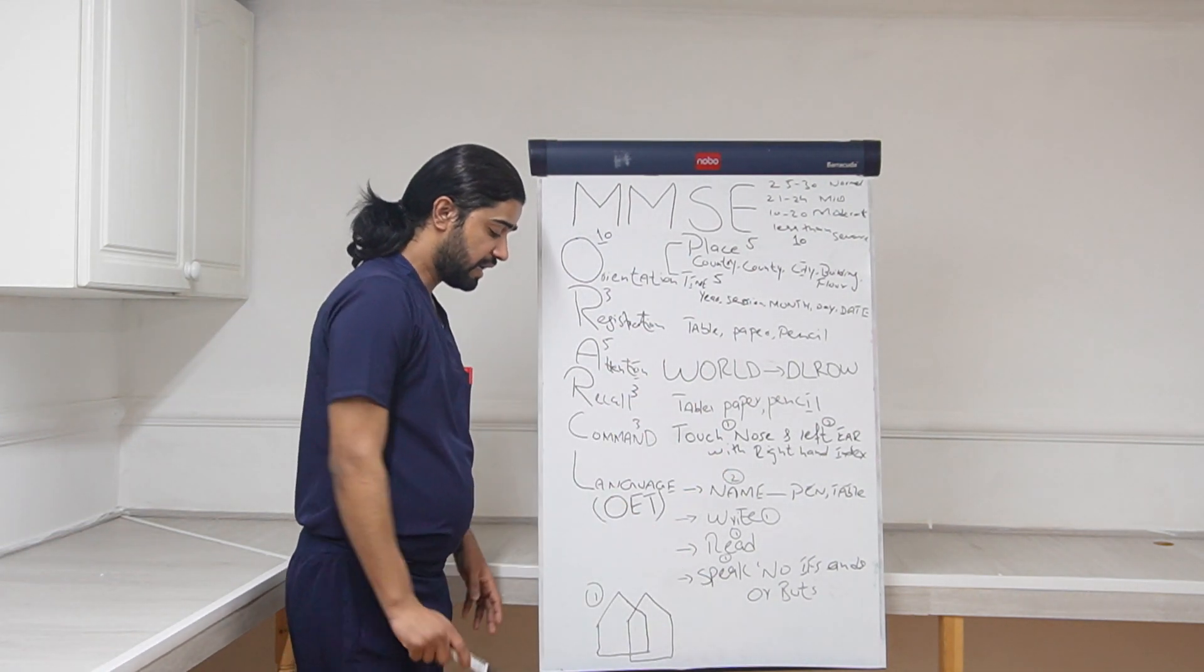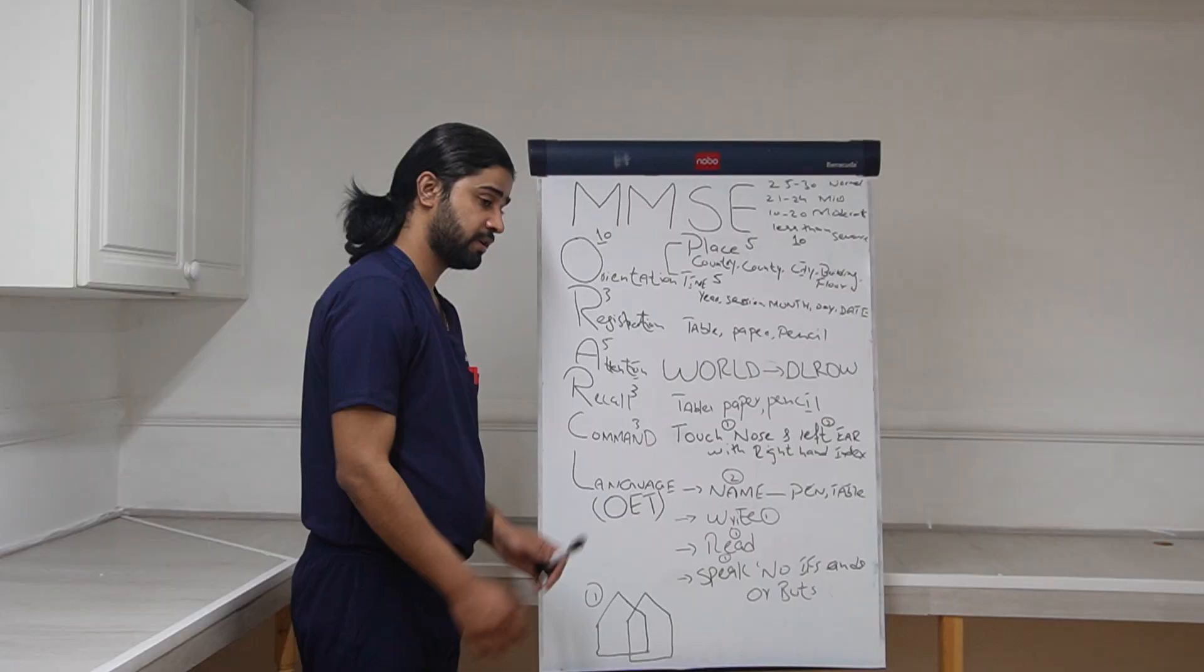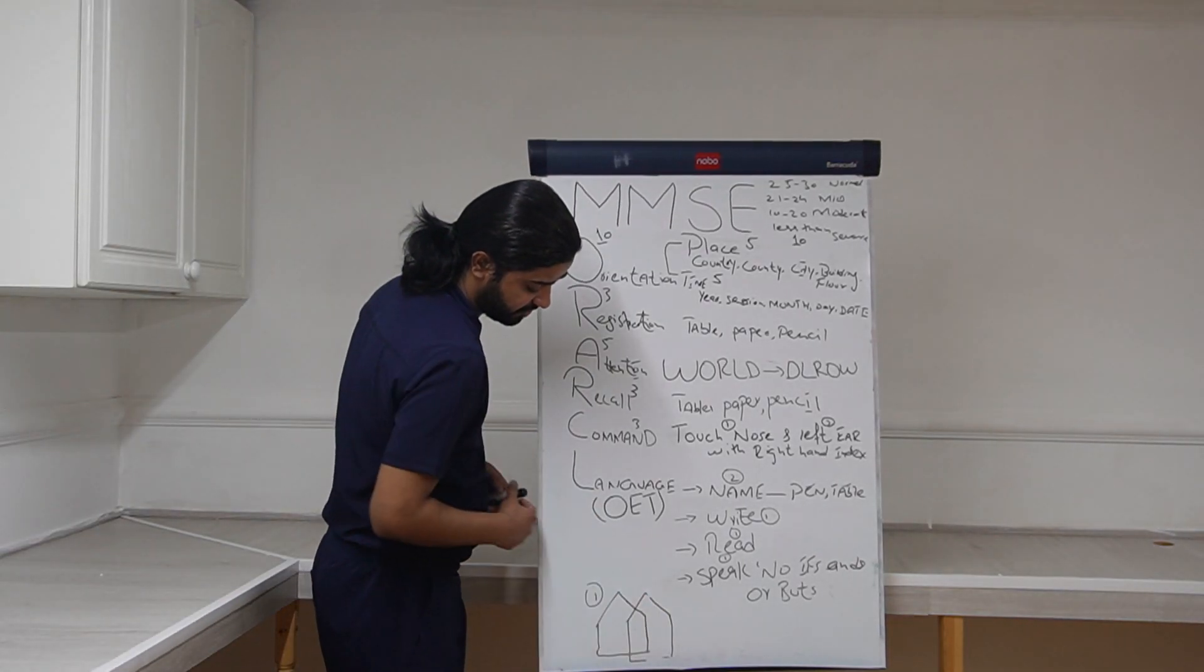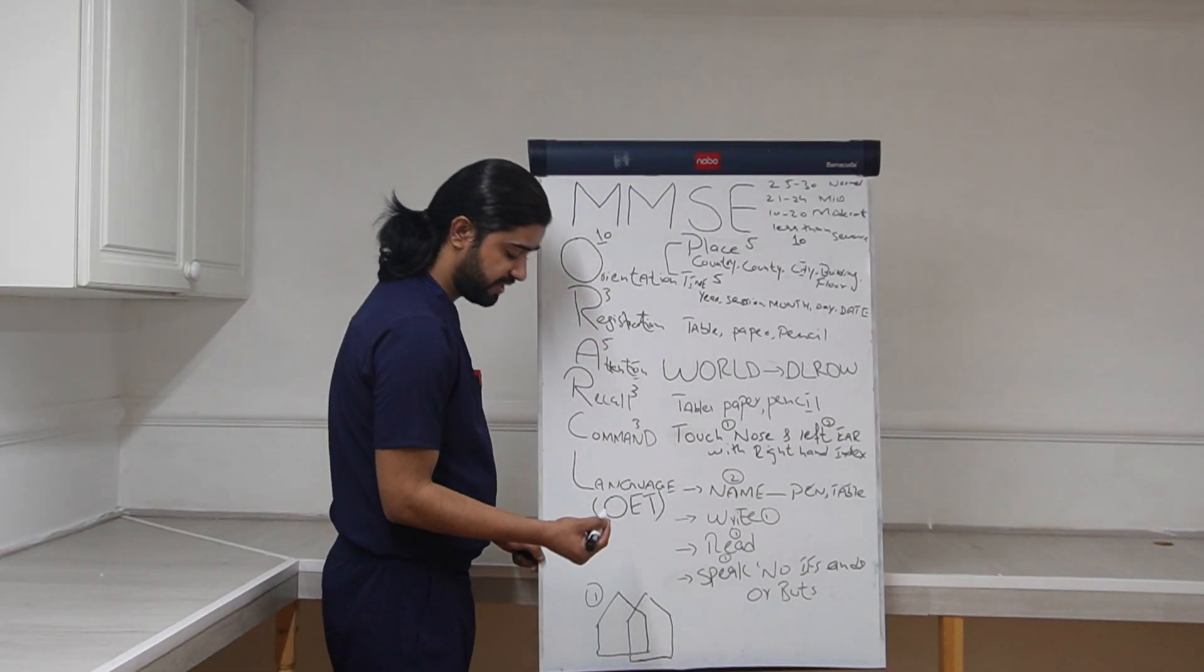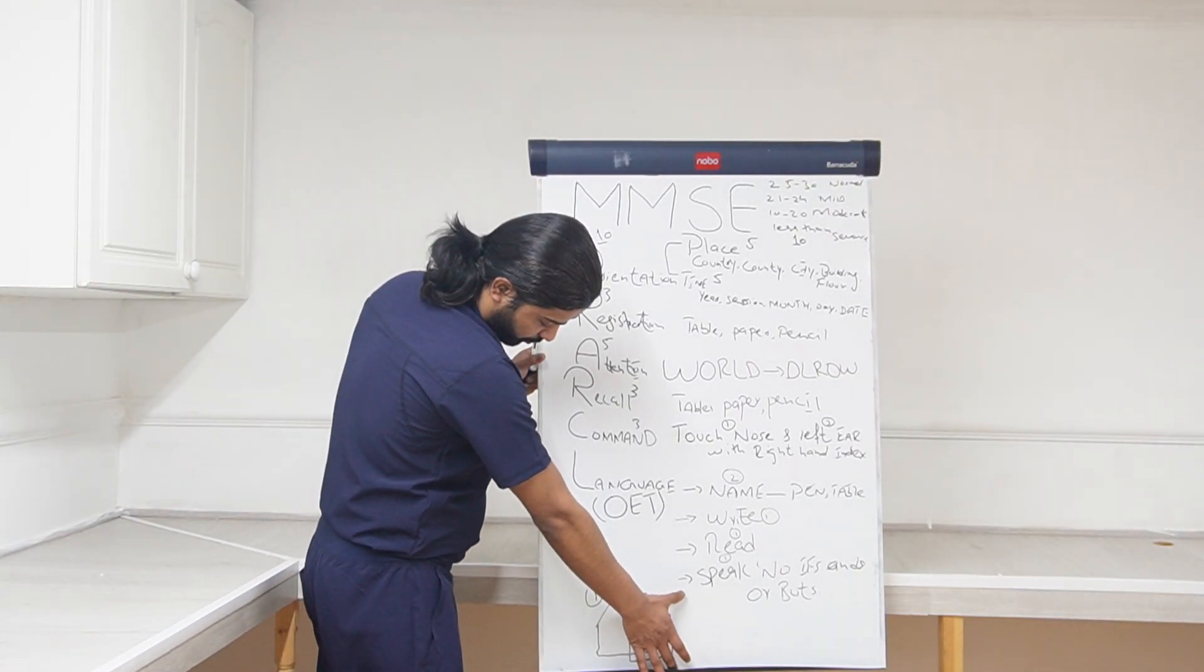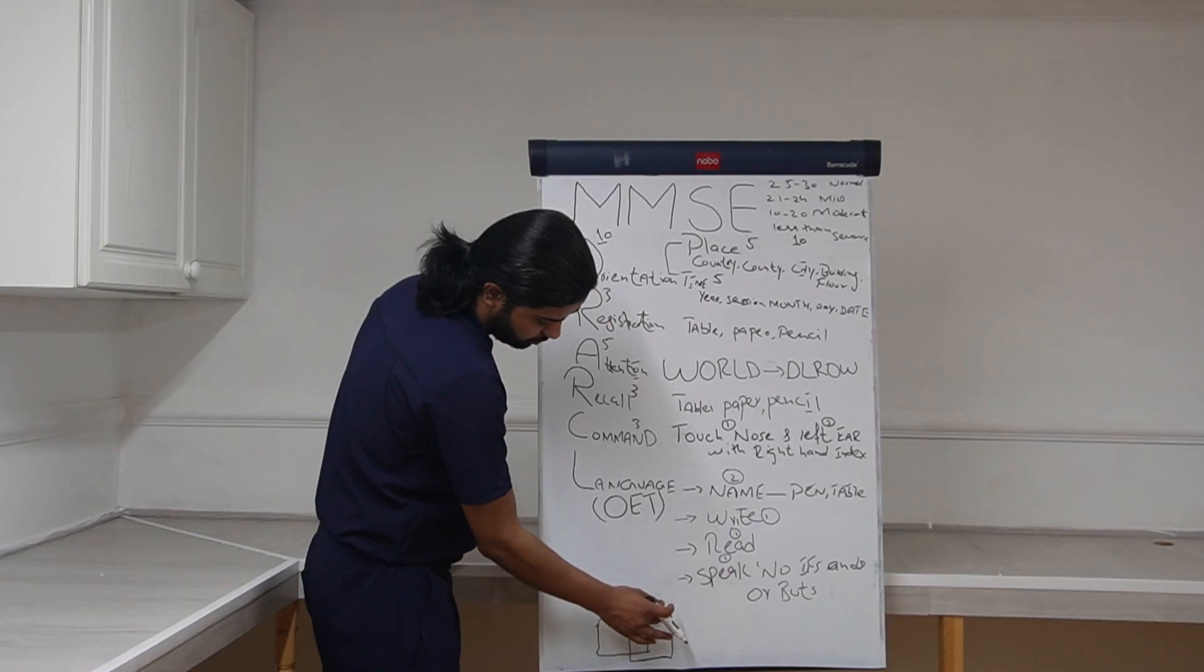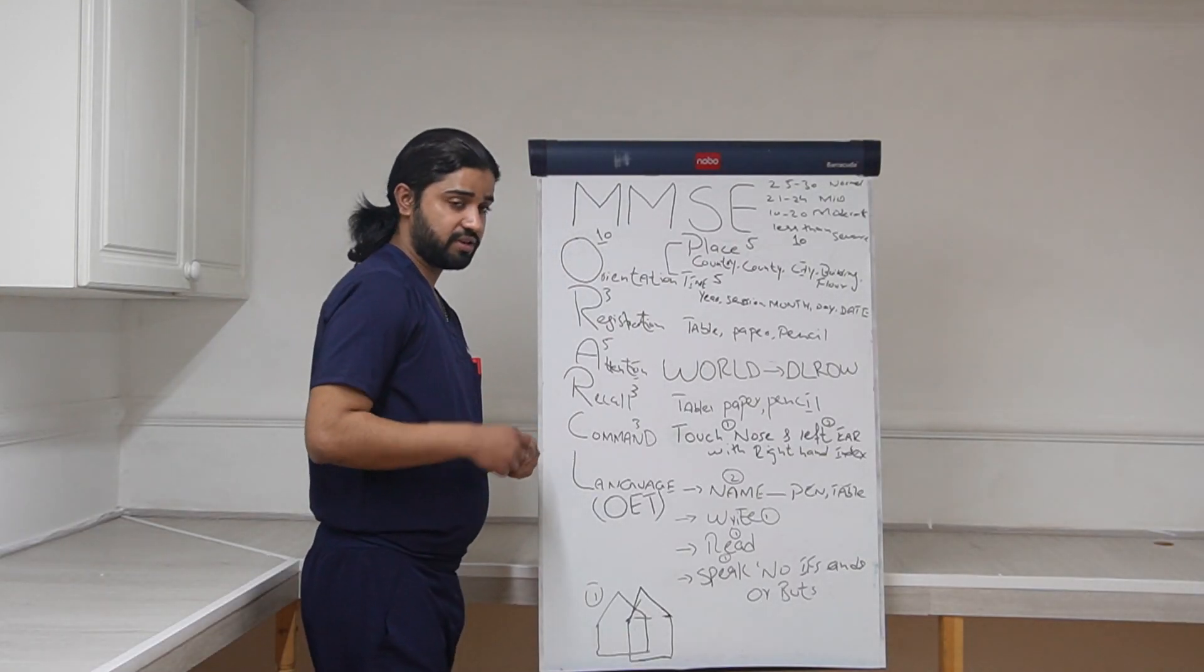Last thing, doctors, here in MMSE is the drawing of this picture. Simply draw these five-cornered shapes, and they are intersecting, both these shapes are intersecting with each other. So ask the patient to copy this. If patient is able to copy this, give him one mark. And remember, he should be drawing all the five corners of each shape. So he should be drawing all the five corners.